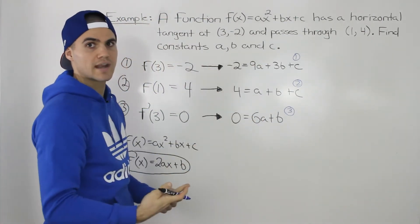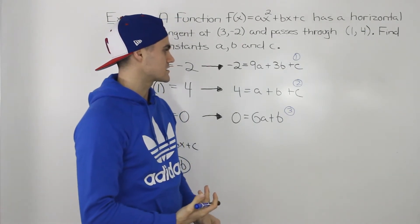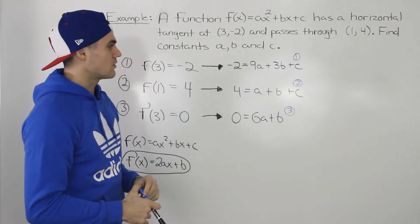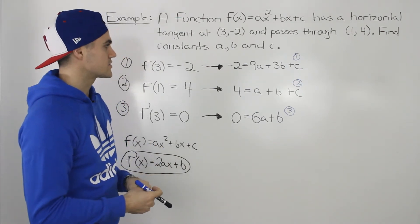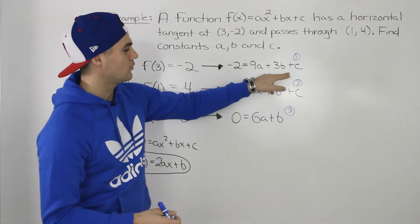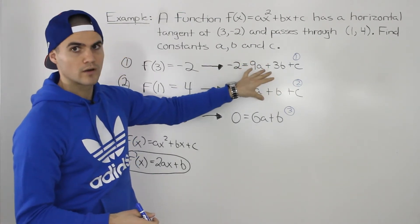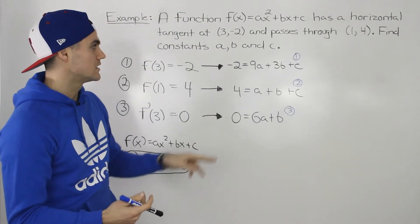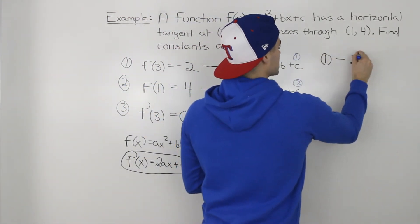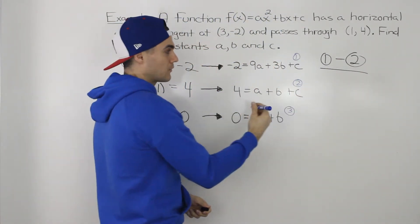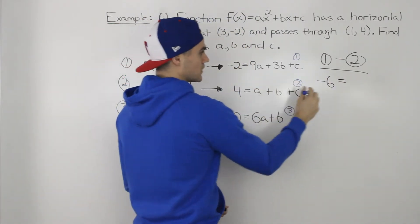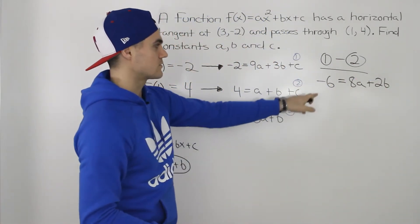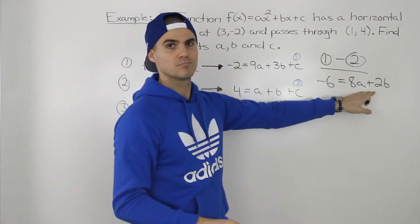Three equations, three unknowns — now we can solve for our constants. There are a bunch of different ways: substitution, elimination, or even a matrix. I'm going to use a mix of substitution and elimination. The first thing I notice is that equations 1 and 2 both have the c value. If we subtract one from the other, c goes away and we get a simplified equation with only two constants. Taking equation 1 minus equation 2: negative 2 minus 4 gives negative 6, 9a minus a gives 8a, 3b minus b gives 2b, and c minus c is 0. So we get negative 6 equals 8a plus 2b.